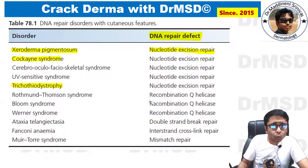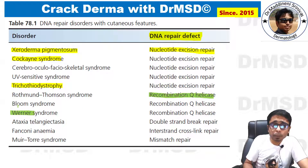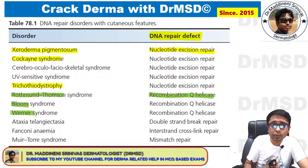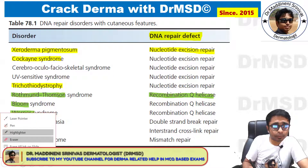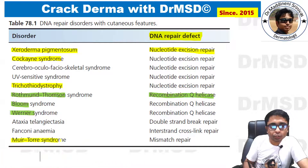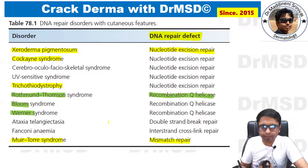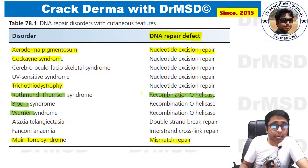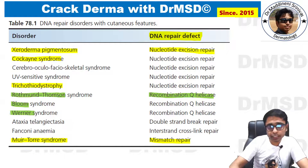Then comes the group which are due to a defect in the RecQ helicase. What are those diseases? Werner syndrome, Bloom syndrome, and Rothmund-Thomson syndrome — these are the three conditions due to RecQ helicase defects. Muir-Torre syndrome is due to the mismatch repair defect, not nucleotide excision repair. You might read more exhaustive lists in pathology, but these are important from a dermatological standpoint.